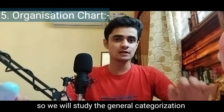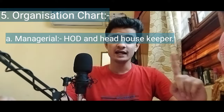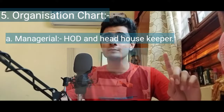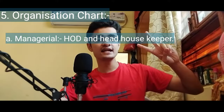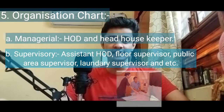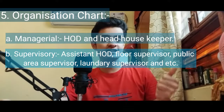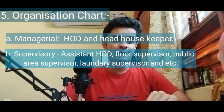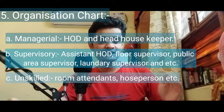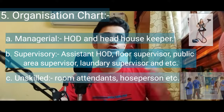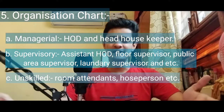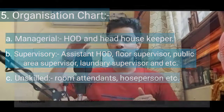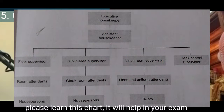Now we will discuss the organizational chart of the housekeeping department. We will cover the very general categories. It is divided into three parts. First is the managerial level, which includes the H.O.D. (Head of the Department) and head housekeeper, i.e., the housekeeping manager. Second is the supervisory level, which includes the assistant head housekeeping manager and all types of supervisors, such as linen supervisor, laundry supervisor, and public area supervisor. Third is the unskilled level, which includes room attendants and house persons — those who are below the supervisors. I am also sharing a basic organizational chart that is commonly used in hotels.